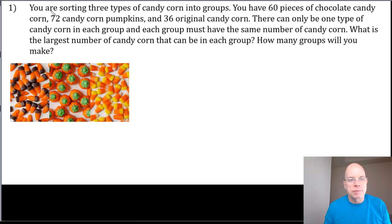So let's read through this one. You're sorting three types of candy corn into groups. You have 60 pieces of chocolate candy corn, 72 candy corn pumpkins, and I'm going to label these 60 here, 72 here, and 36 original candy corn. There can only be one type of candy corn in each group and each group must have the same number of candy corn.